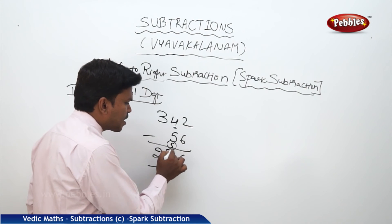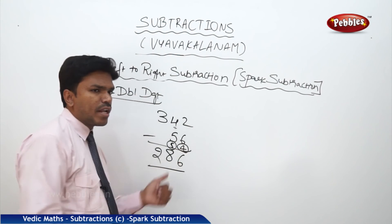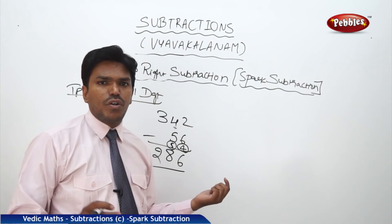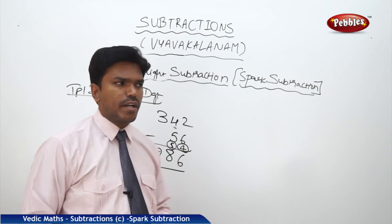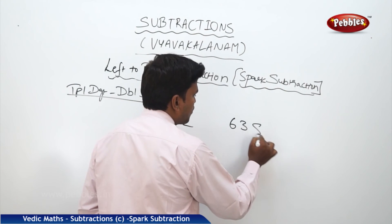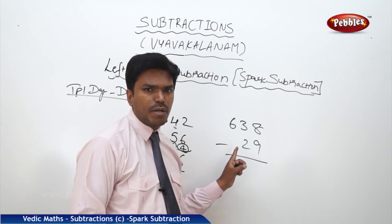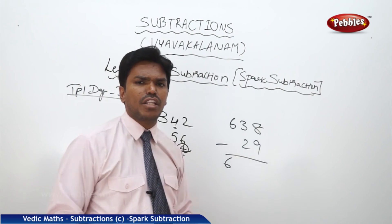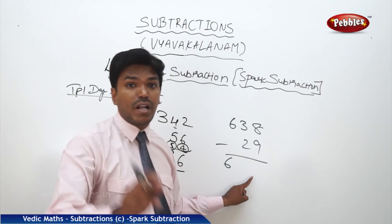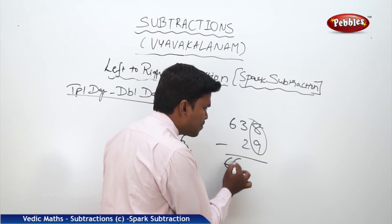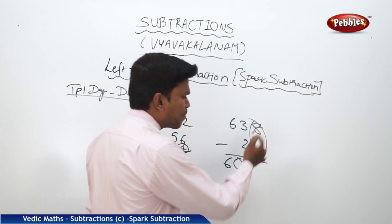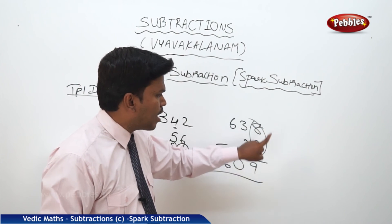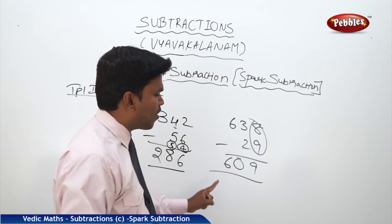One more example: 638 minus 29. Drop 6 as it is. Before dropping 6, check — next numbers are match. So 6 stays 6. Then 3 minus 2: they are matched, directly subtract to get 1. But before dropping 1, check next numbers — they are mismatched. So 1 becomes 0. Now 8 and 9 are mismatched. So 8 plus complement of 9 (which is 1) equals 9. Answer is 609.